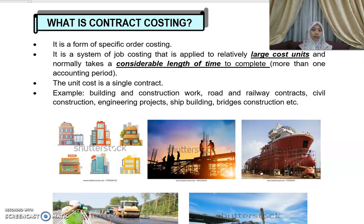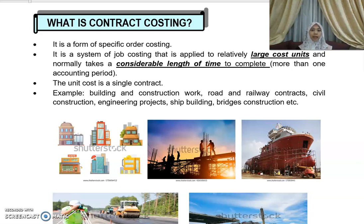As mentioned earlier, specific order costing depends on the customer's special requirement — it's either job, batch, or contract. Contract normally takes a longer duration to complete. The cost involved is normally a large sum of money. For example, to build a house, you might incur more than 100,000 ringgit, whereas a job can be completed within 10,000 ringgit or less. So contract costing is a system of job costing applied where large cost units are undertaken and the time to complete is more than one accounting period, with each contract treated as one cost unit.